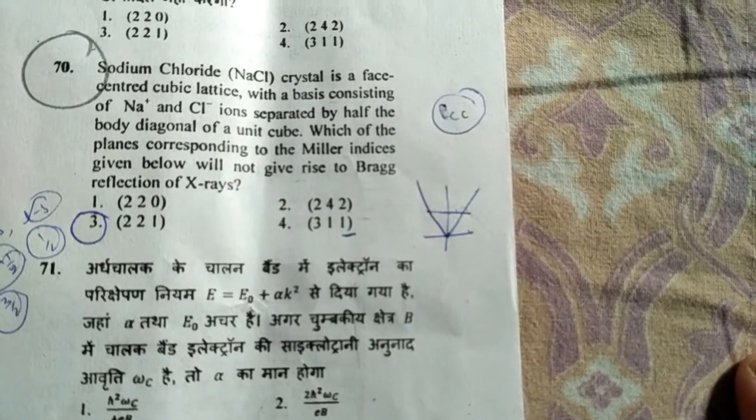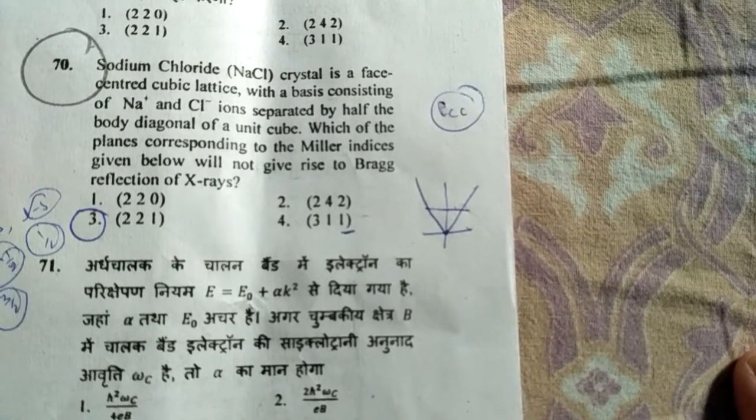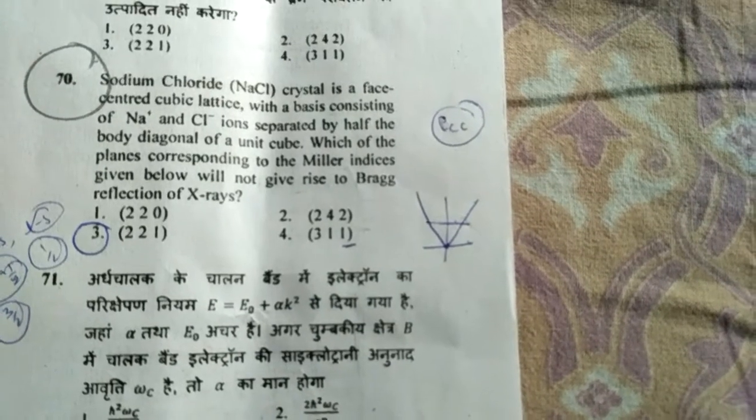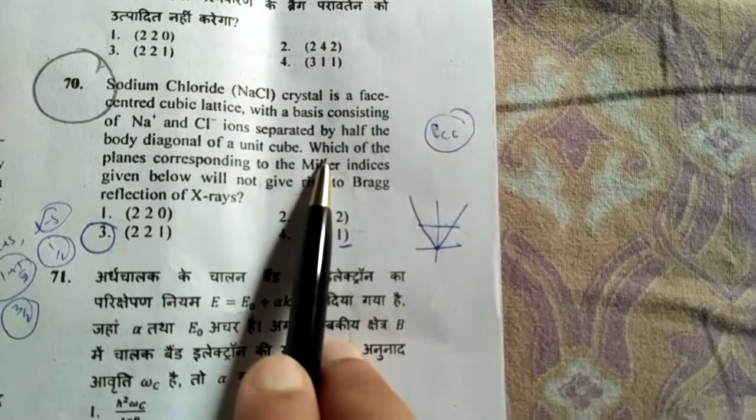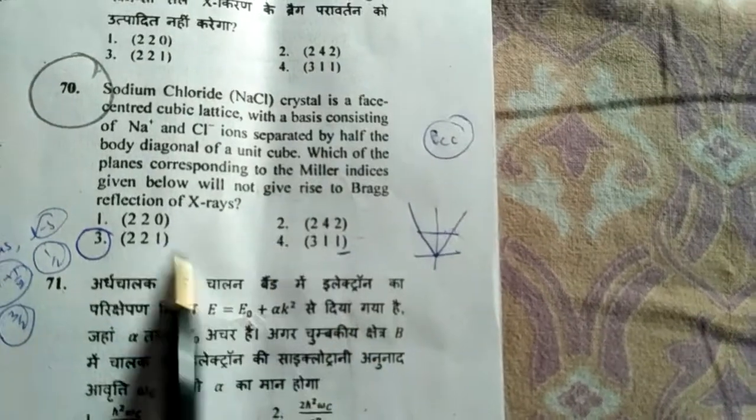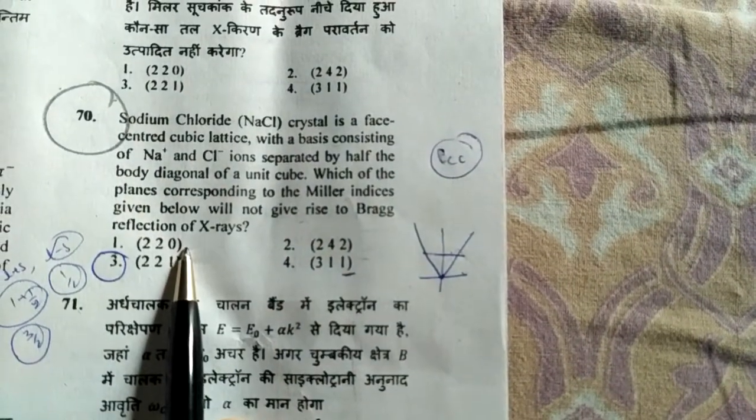To follow Bragg's reflection law, all planes must be present in FCC structure. In FCC structure, either fully odd planes are present or fully even. 2, 2, 0 - that is considering fully even.